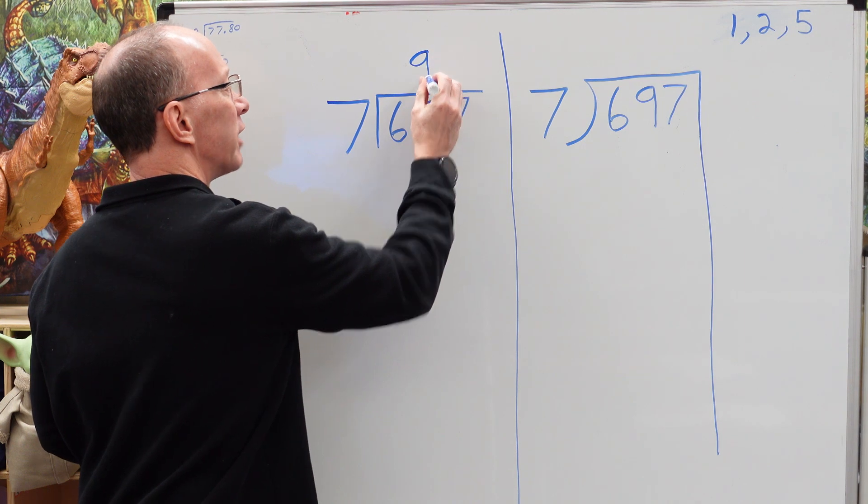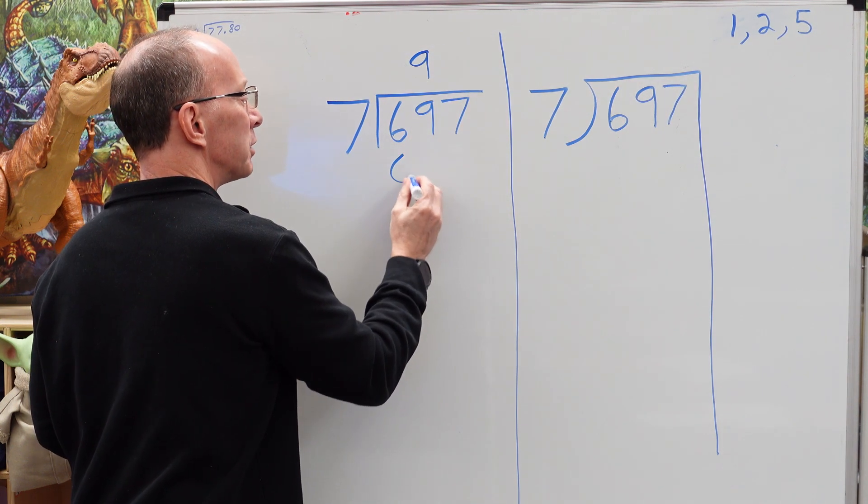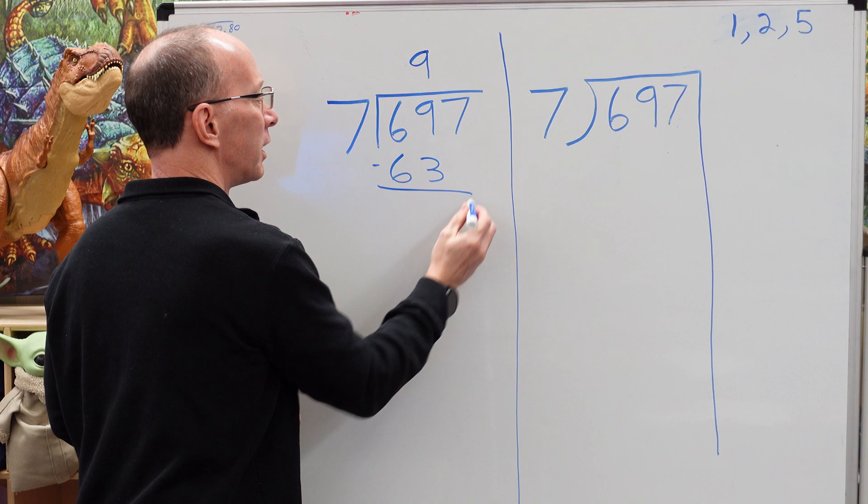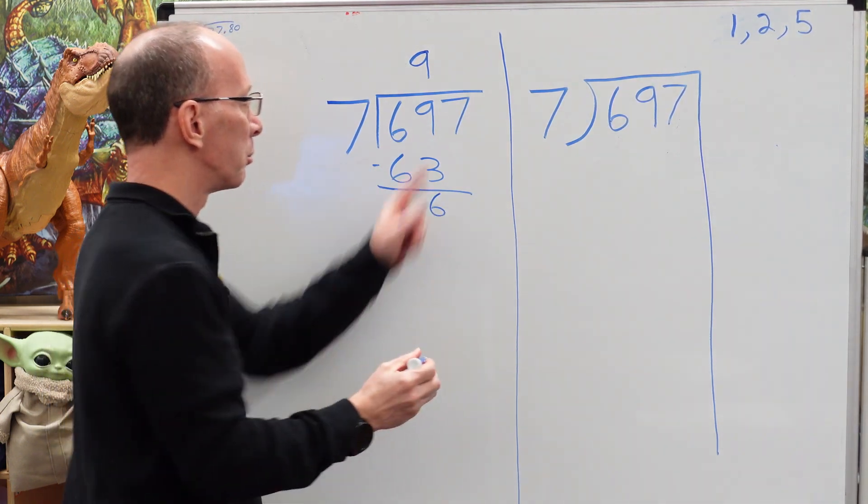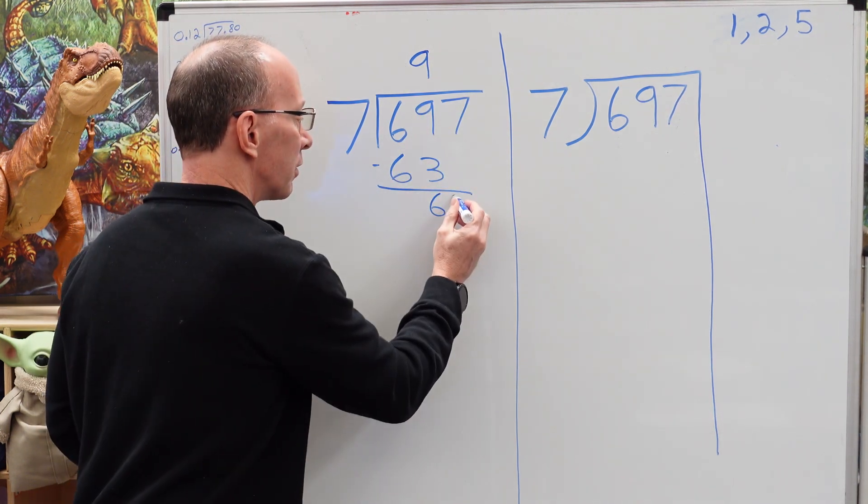Alright, let's stay with seven times nine. So seven times nine is 63. Subtract. Nine minus three is six. Bring the next number down. Just drop it down.